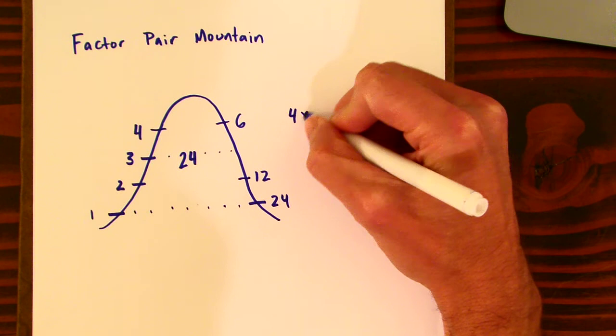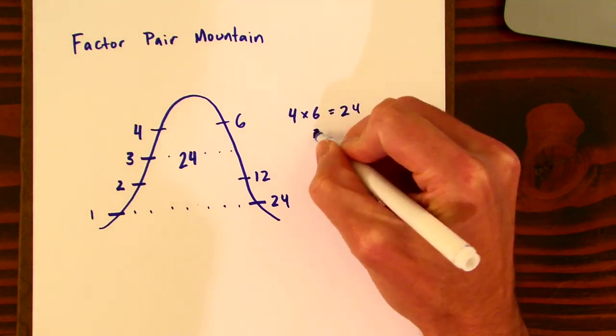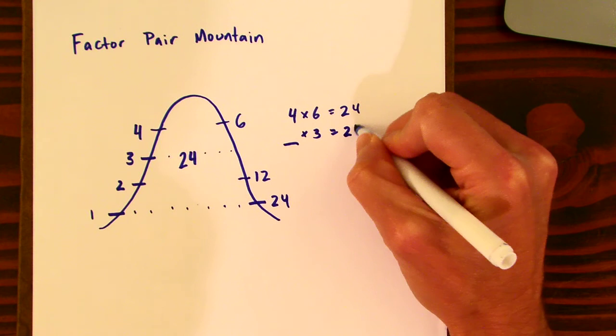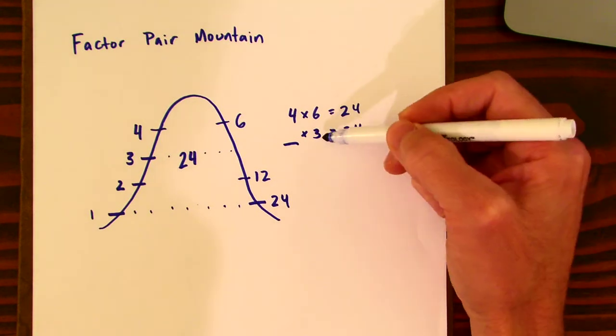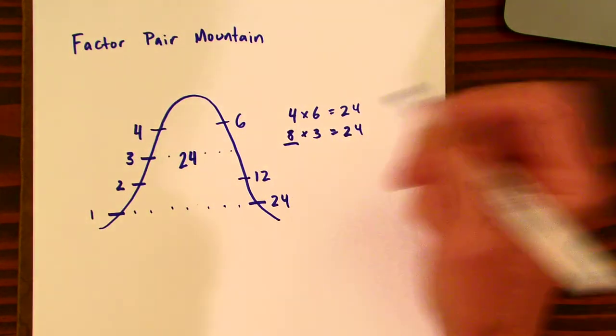Four times six equals 24, so three times what equals 24, and we might recognize that if we cut six in half, we need to double the four, so we know eight goes here.